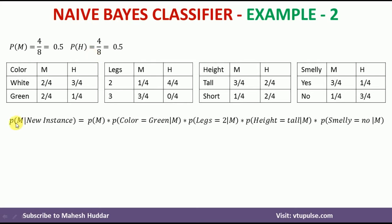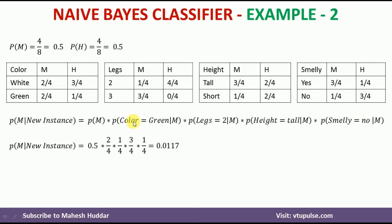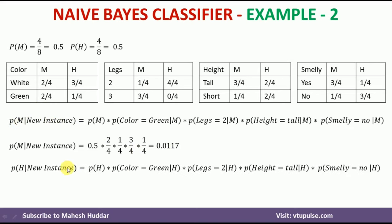The probability that the new instance belongs to M equals the probability of M multiplied by: P(color=green|M), P(legs=2|M), P(height=tall|M), and P(smelly=no|M). Putting in the values, we get 0.0117. Similarly, the probability that the new instance is classified as H equals P(H) multiplied by P(color=green|H), P(legs=2|H), P(height=tall|H), and P(smelly=no|H). Putting in the values, we get 0.047.